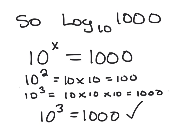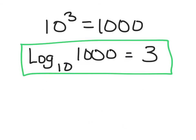10 to the third. We have our base and now we know our exponent. 10 to the third equals 1000. So 10 is our base, 3 is our exponent or power, equals our 1000. Log base 10 of 1000 equals 3.